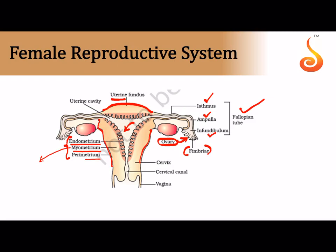The myometrium contains involuntary smooth muscle cells that help in childbirth — during parturition they exhibit vigorous contraction and relaxation. The endometrium, richly supplied with blood vessels and glands, undergoes cyclical changes every month in female primates including humans, and this monthly cycle is called the menstrual cycle. The narrow neck of the uterus is referred to as the cervix.